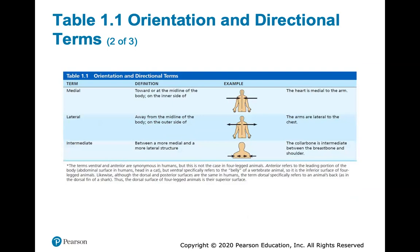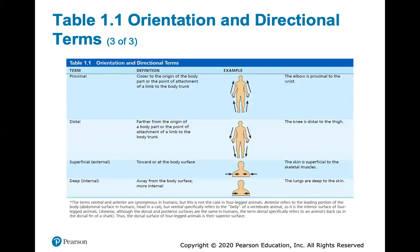Medial, lateral, and intermediate: medial refers to anything toward or at the midline of the body — the heart is medial to the arm, meaning it's more toward the center. Lateral refers to anything away from the midline or on the outer side — the arms are lateral to the chest. Intermediate means between a more medial and a more lateral structure; the collarbone is intermediate between the breastbone and the shoulder.